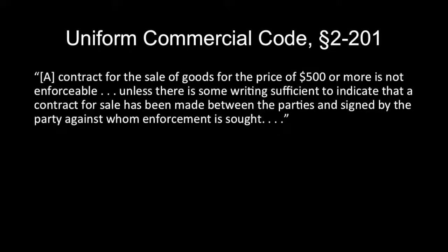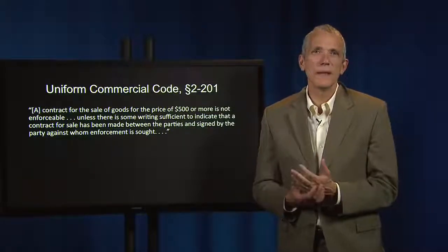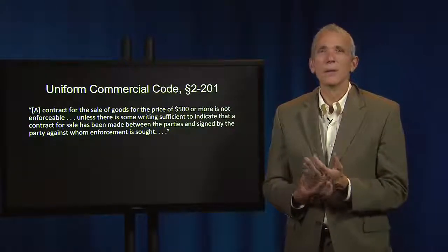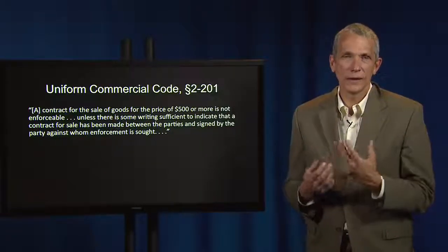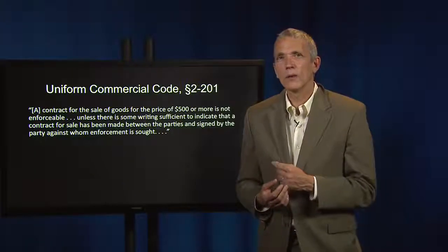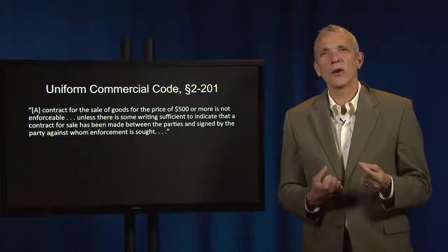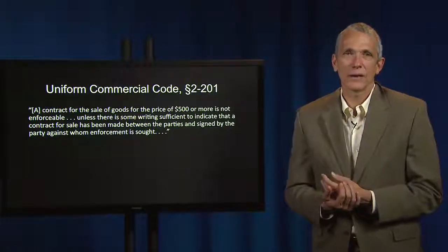Section 17 finds a very similar counterpart in the UCC Section 2-201. Subsection 1 provides that a contract for the sale of goods for a price of $500 or more is not enforceable unless there is some writing sufficient to indicate that a contract for sale has been made between the parties and signed by the party against whom enforcement is sought. A writing is not insufficient because it omits or incorrectly states a term agreed upon, but the contract is not enforceable under this provision beyond the quantity of goods shown in the writing. The provision only requires signing by the party against whom enforcement is sought because the seeker is not denying the existence of the contract — it's only the other side.